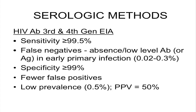If you have a low-prevalence population — say your HIV rate is half a percent — even a specificity of 99% will give you a positive predictive value of only about 50%. That brings us back to the problem of giving a diagnosis of HIV infection to a patient who doesn't actually have it.